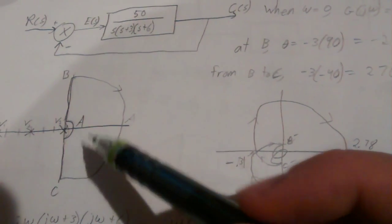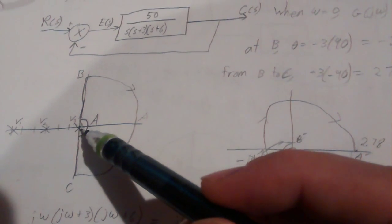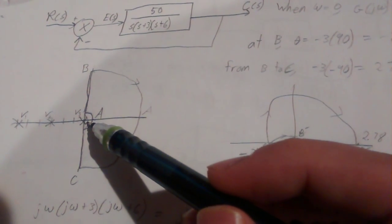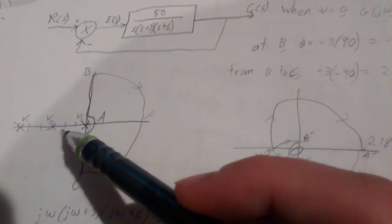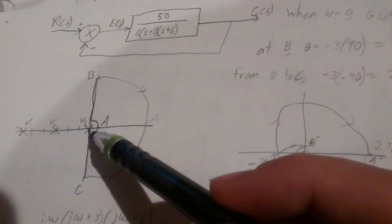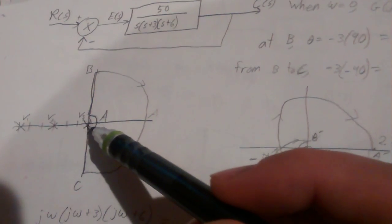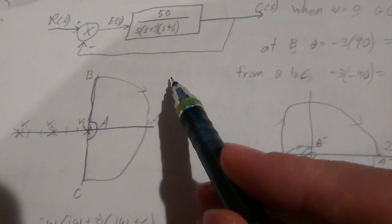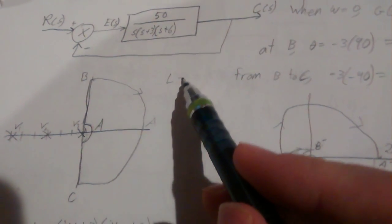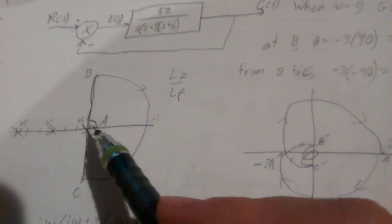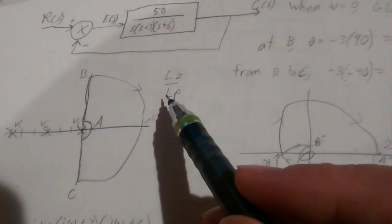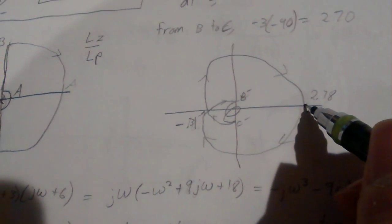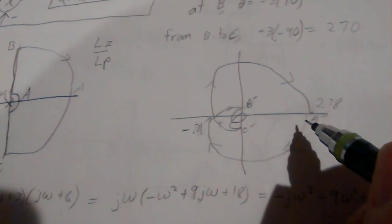We're going to start at point A. The magnitude and phase is relative to these three poles. At point A, which is at the origin, the distance between this pole and A is infinitesimally small. Since we have the lengths of the zeros over the lengths of the poles, we have a pole length that's infinitesimally small, which makes this ratio infinite. So our point A prime is at infinity.